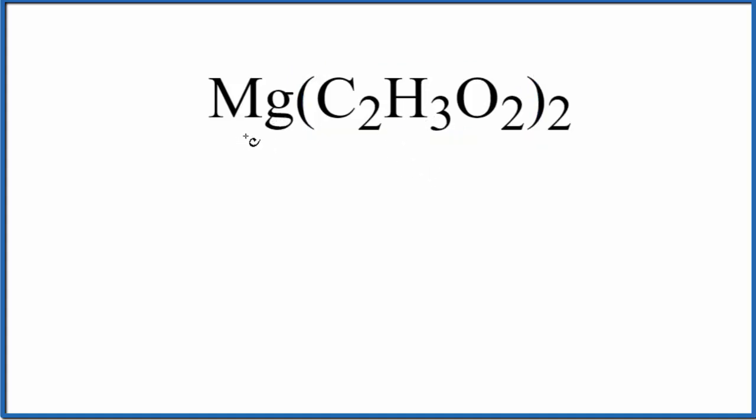First, we write the name for Mg as it appears on the periodic table. That's just magnesium. Next, we write the name for the polyatomic ion here. This is the acetate ion, lowercase a.